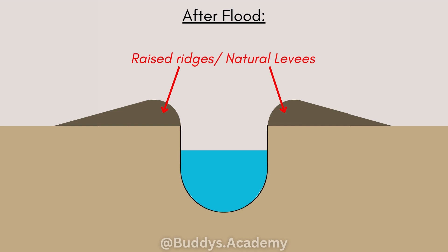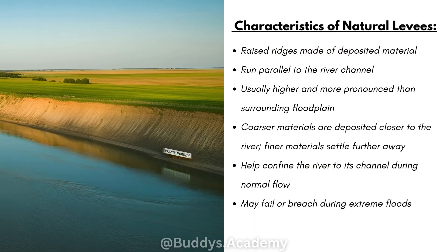That is what's going to raise the level of the river higher than that of the floodplain. So what are some characteristics of your natural levees? Firstly, your raised ridges are going to be made of deposited material. Secondly, they're going to run parallel to your river channel, meaning along your riverbanks. They are usually higher and more pronounced than the surrounding flat plain.